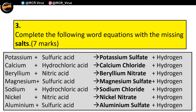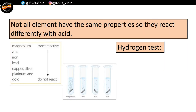Not all elements have the same properties, so they react differently with acid. We have here a list of elements from the most reactive at the top to the least reactive at the bottom. Magnesium had the most effervescence, the most bubbling, and the highest temperature — because magnesium is a very reactive element. Lead is further down the list, so as you go down, there will be less fizzing, less hydrogen produced in the same amount of time, and less temperature rise.